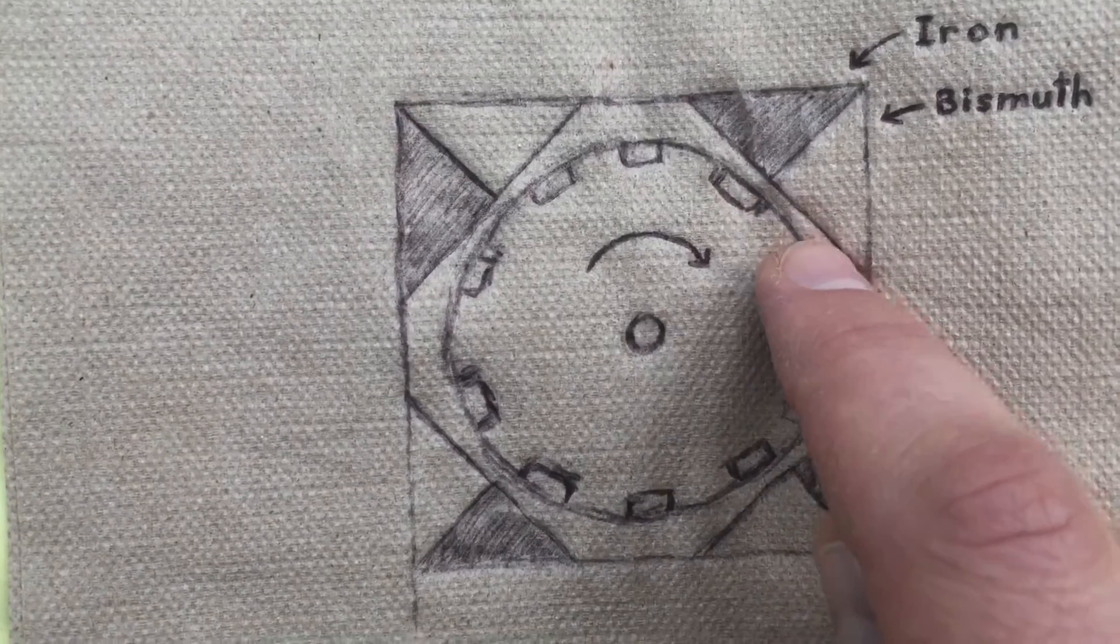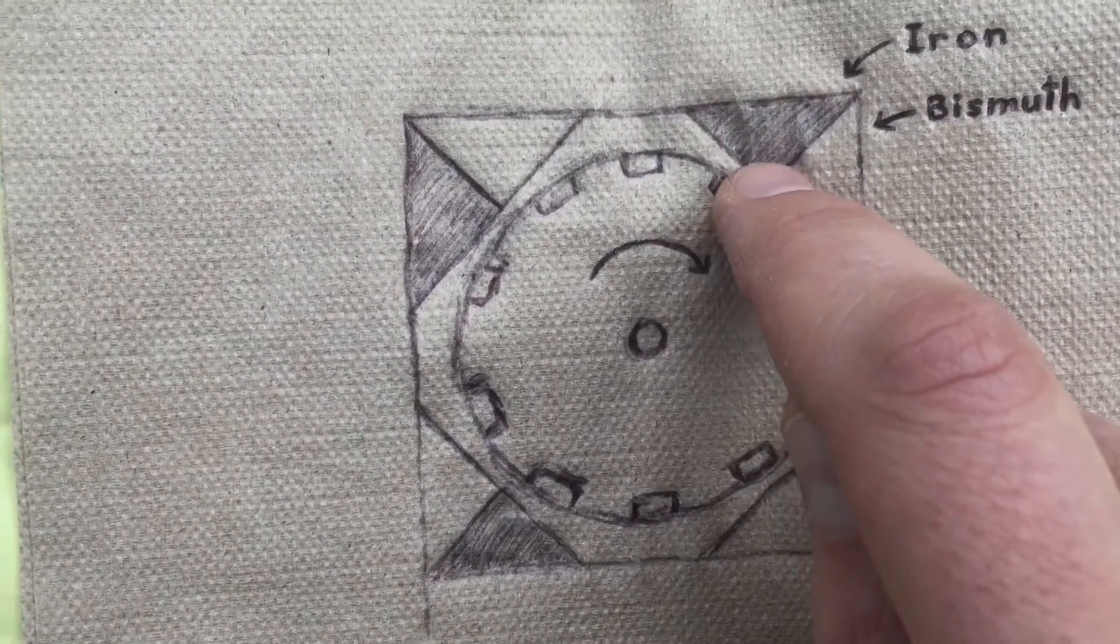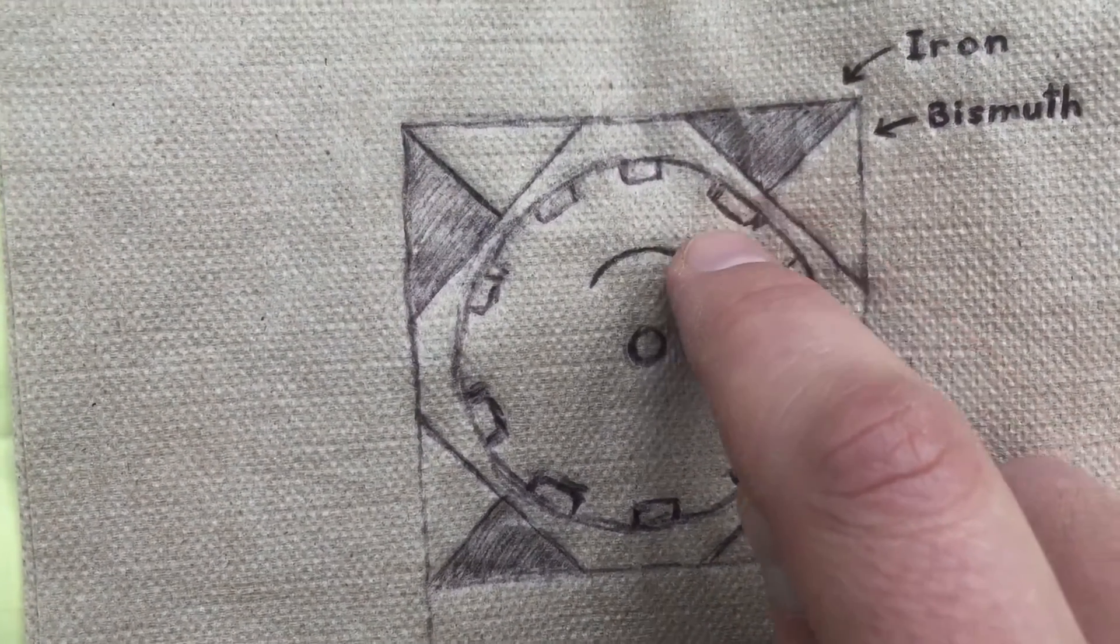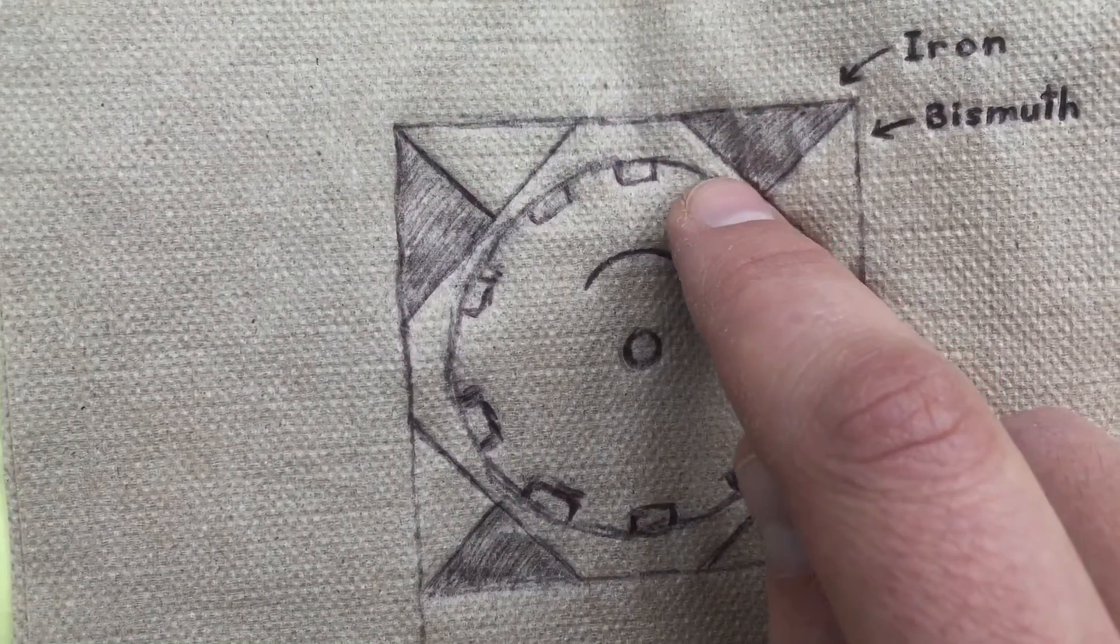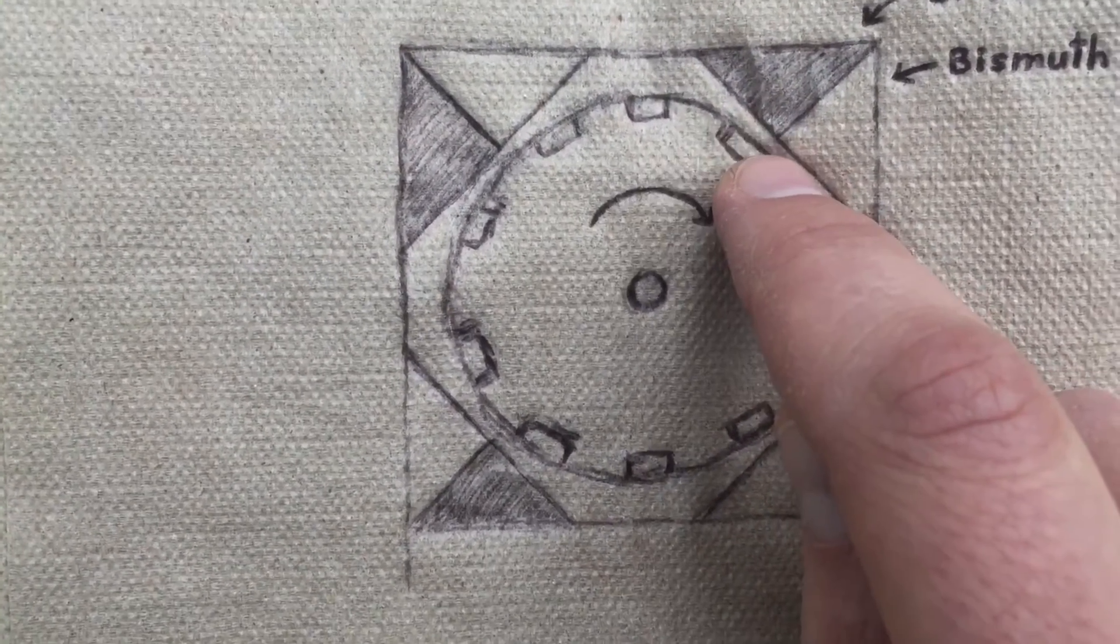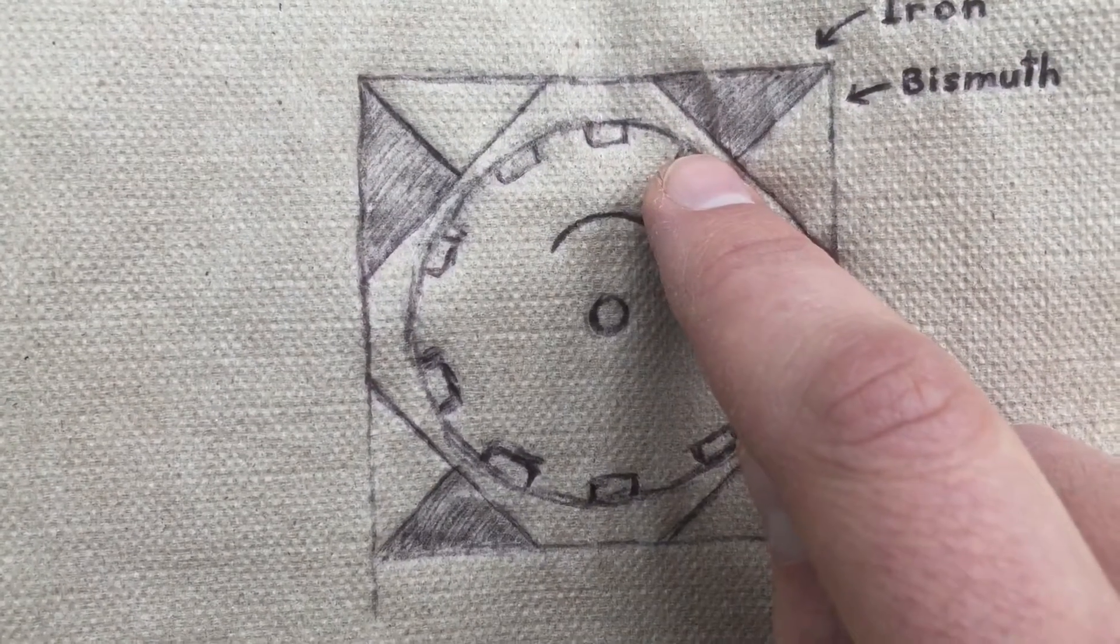So it would want to repel itself away from the bismuth in this direction. You could get cogging right here where they meet, where it wants to attract to the iron but won't go any further than that because of the bismuth.